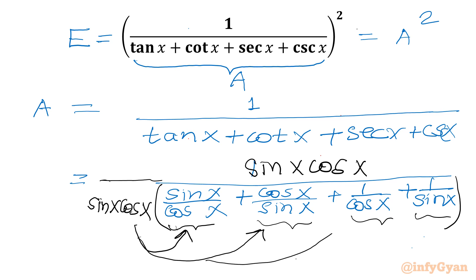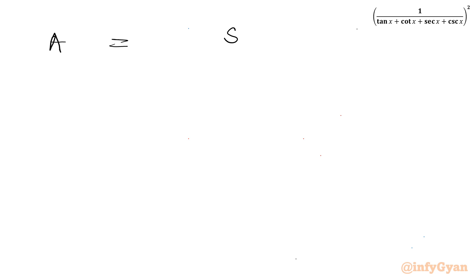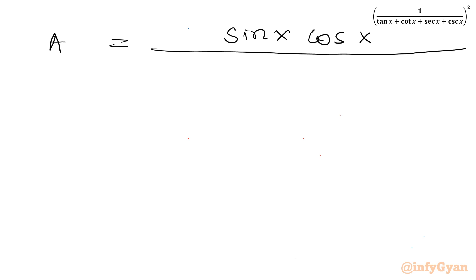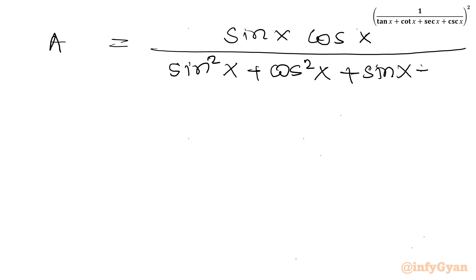So in the denominator it will be sin² x + cos² x + sin x + cos x. Therefore A = (sin x · cos x) / (sin² x + cos² x + sin x + cos x).